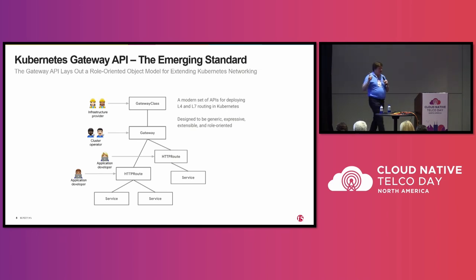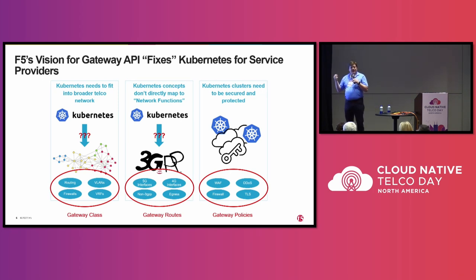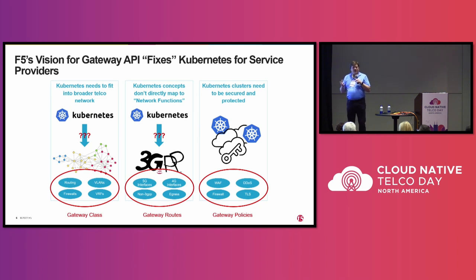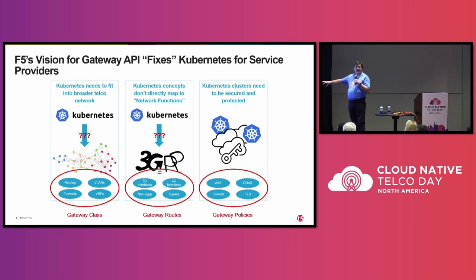They just announced GA for 1.0. It has fairly limited functionality, but it is continuing to grow, and I encourage anyone interested to come and join us. If you look at where it's going, it has these concepts of gateway class, routes, and policies. It could easily take and solve all of these problems and map them in a real Kubernetes-native way.